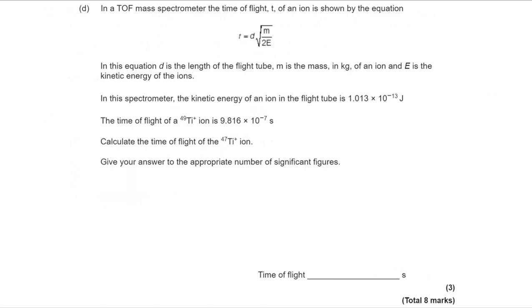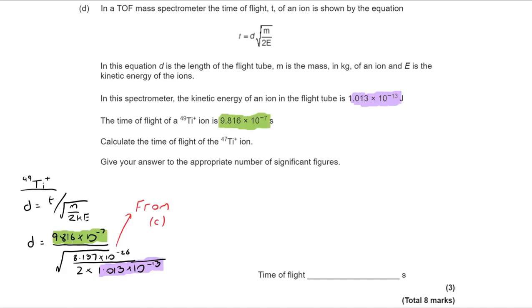When you look at the titanium 49, where we have been given the time of flight, we've got the kinetic energy. The one thing that we're missing—we've just calculated the mass—so the one thing we're missing is the distance, the length of the flight tube. So we rearrange to make d the subject. Once I've done that, I can put my figures in, and I've color coded so you can see where they come from. I've put in for the mass that we calculated as part C of this question. Now, that allows us to get to a flight tube being 1.547 metres long.